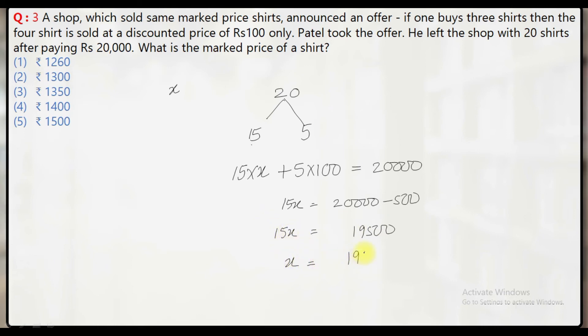X must be equal to Rs.19,500 divided by 15. You cancel it out 15×1, 15×3, so what you will get is Rs.1300.